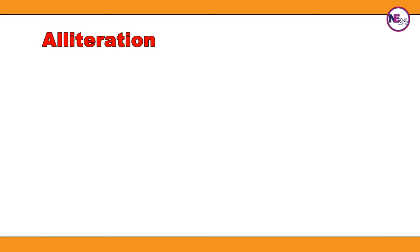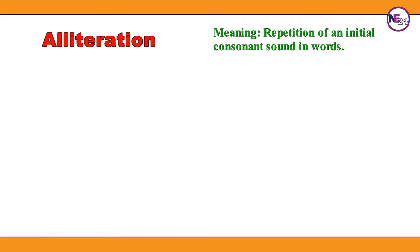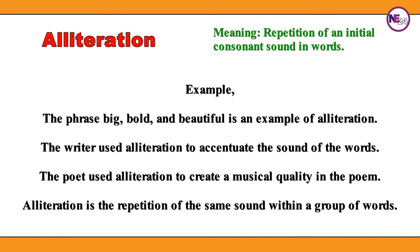Alliteration: the repetition of an initial consonant sound in words. The phrase 'big, bold, and beautiful' is an example of alliteration. The writer used alliteration to accentuate the sound of the words. The poet used alliteration to create a musical quality in the poem. Alliteration is the repetition of the same sound within a group of words.